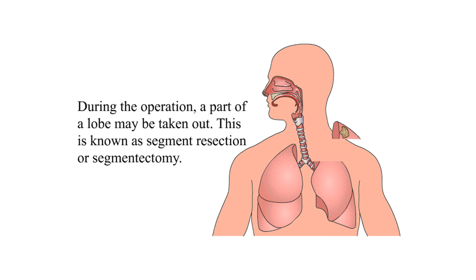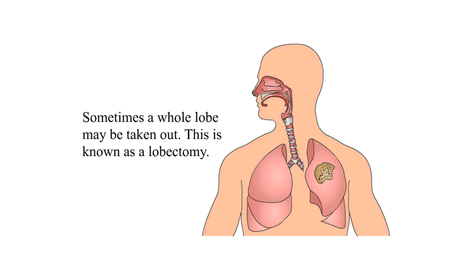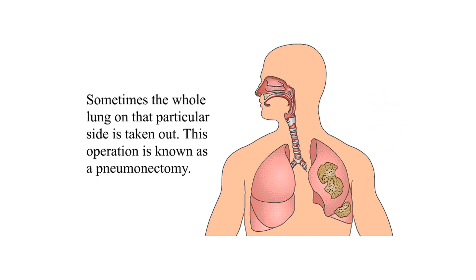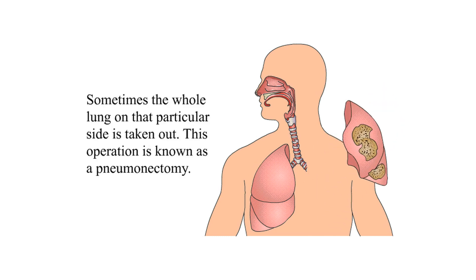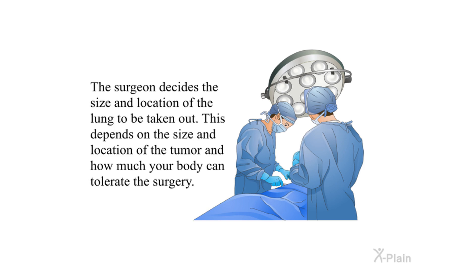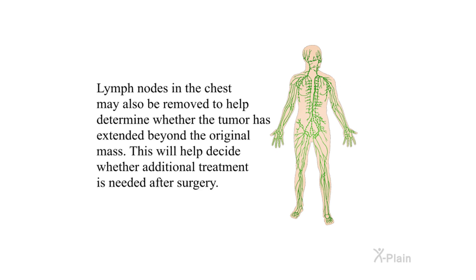During the operation, a part of a lobe may be taken out — this is known as segment resection or segmentectomy. Sometimes a whole lobe may be taken out, known as a lobectomy. Sometimes the whole lung on that side is taken out — this operation is known as a pneumonectomy. The surgeon decides the size and location of the lung to be removed depending on the size and location of the tumor and how much your body can tolerate. Lymph nodes in the chest may also be removed to help determine whether the tumor has extended beyond the original mass and whether additional treatment is needed after surgery.